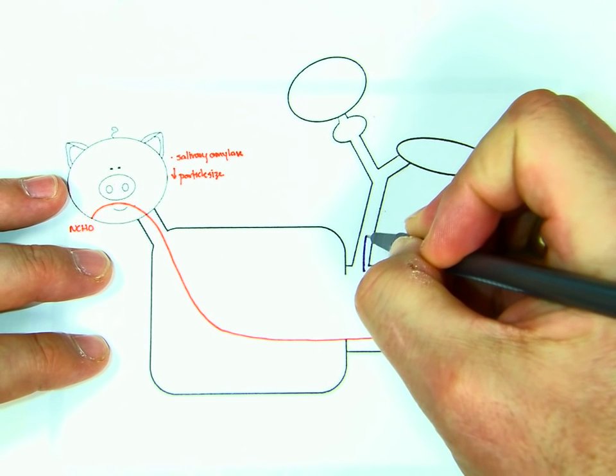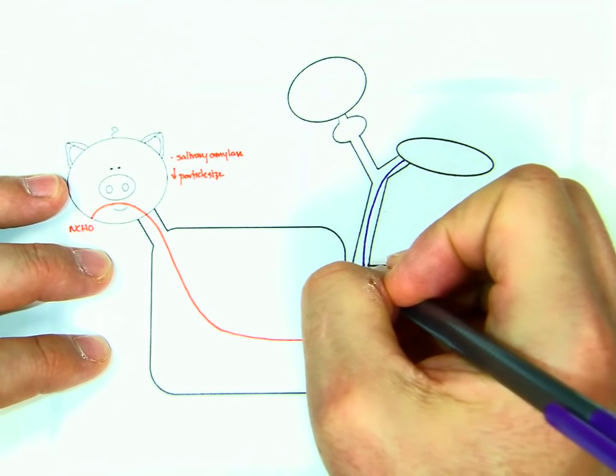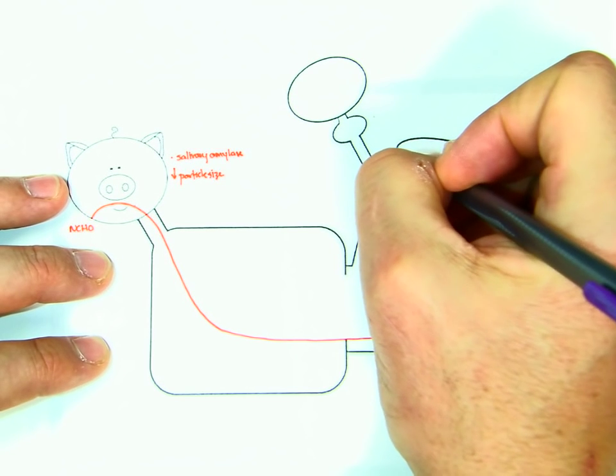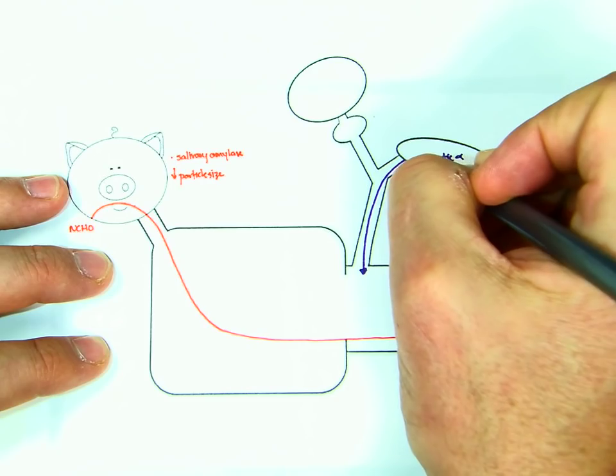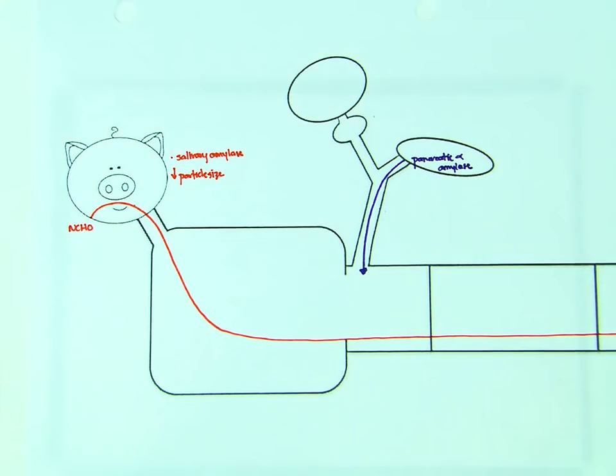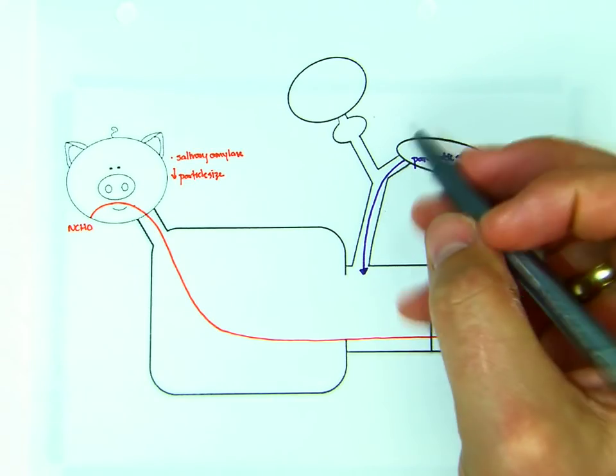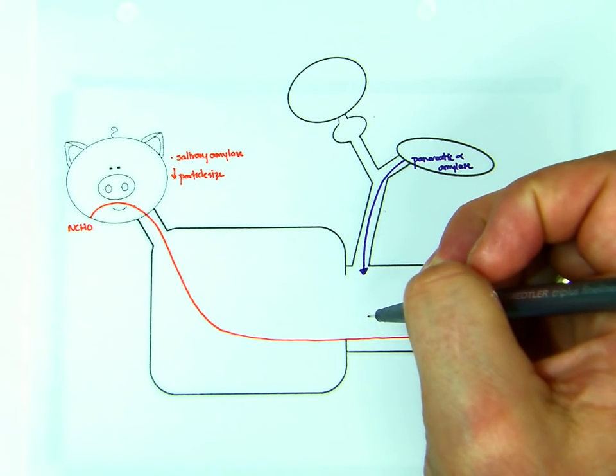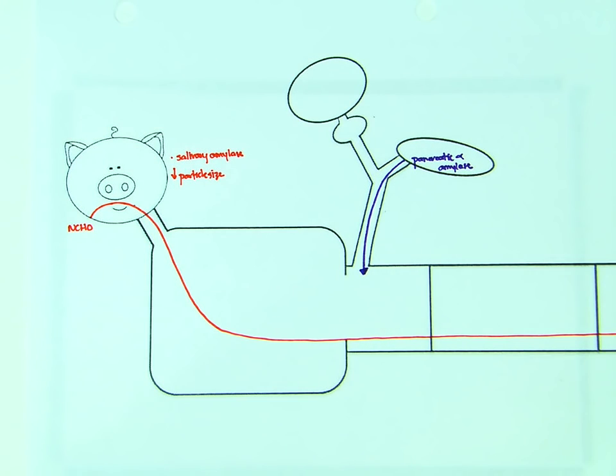the pancreas is going to release pancreatic alpha amylase. And pancreatic alpha amylase is going to break the starch down into smaller pieces by hydrolyzing 1,4 bonds. We're not going to draw it so much, but you need to keep it in mind. The pancreas is still producing buffer. That buffer is going to raise the pH. It's going to provide sodium for the absorption of glucose and galactose, and it's also raising the pH makes it so the enzymes can stay active.